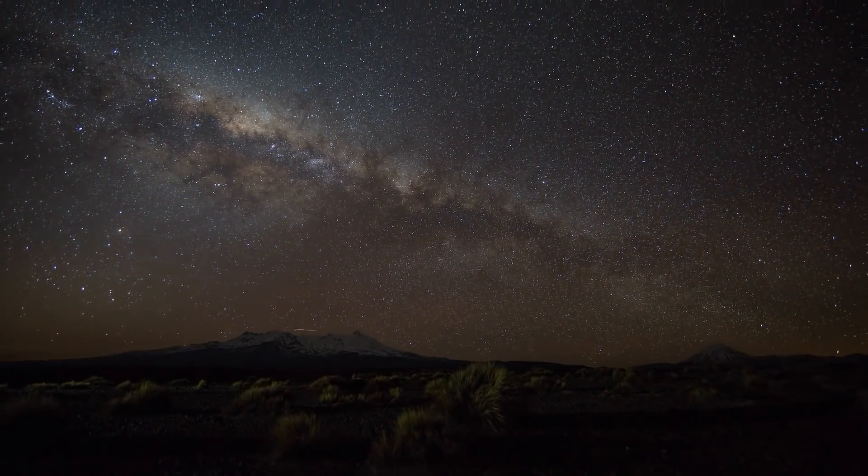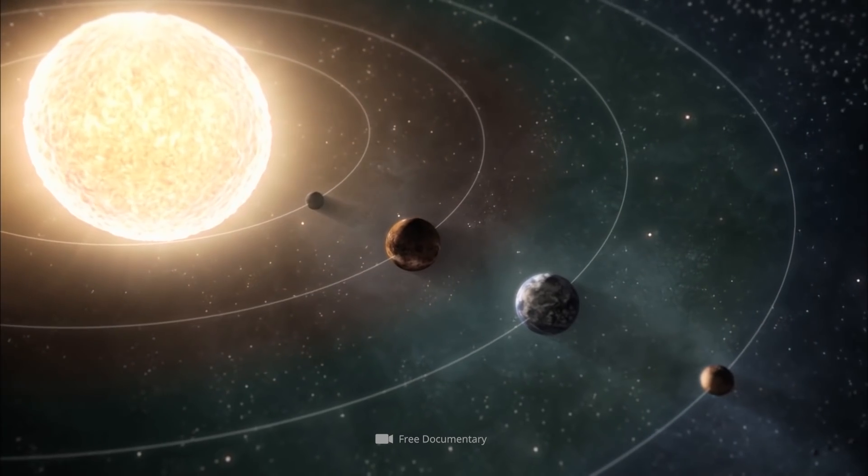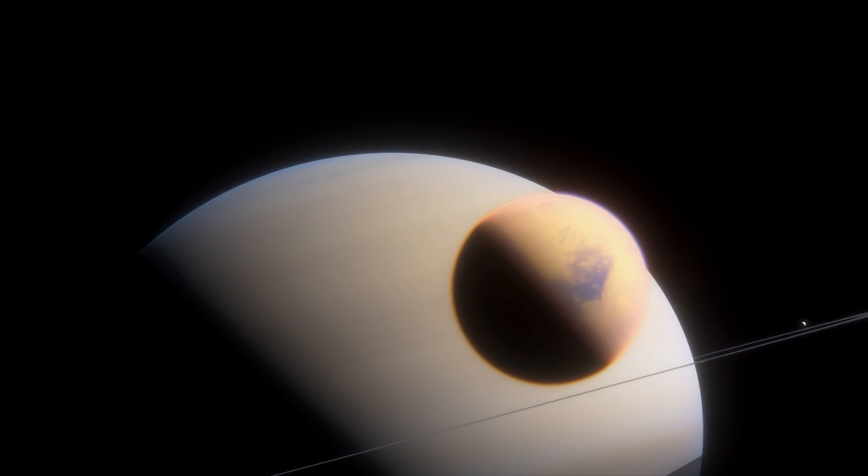A look at the members of our home planetary system reveals a striking pattern. Almost every planet in our galactic neighborhood is orbited by at least one moon.